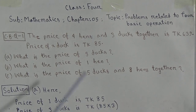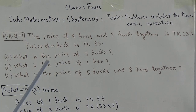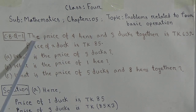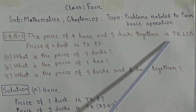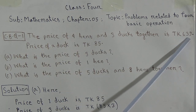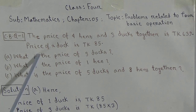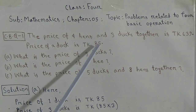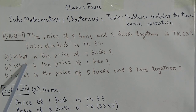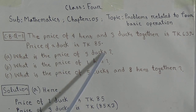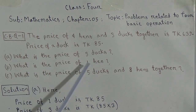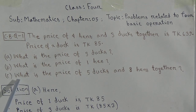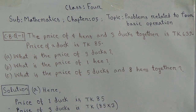Now let us start. I am reading the question — please listen carefully. The price of four hens and three ducks together is TK639. The price of a duck is TK85. Question A: What is the price of three ducks? Question B: What is the price of one hen? And question C: What is the price of five ducks and eight hens together?